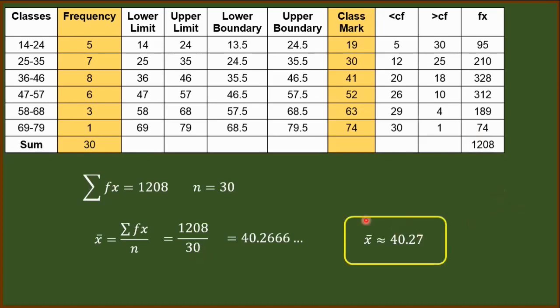And looking at this value, 40.27, it belongs to this class, to the third class, 36 to 46. Meaning, this class, 36 to 46, contains the mean of this data set.